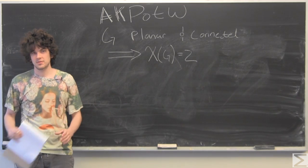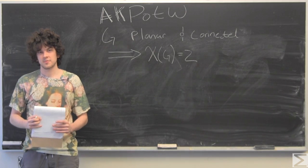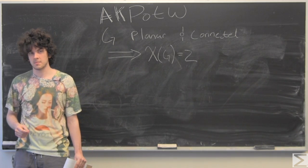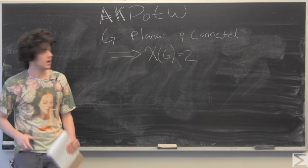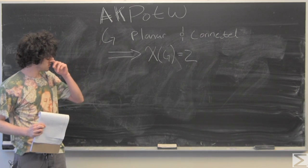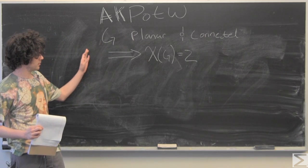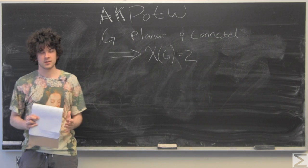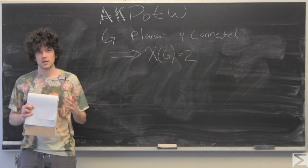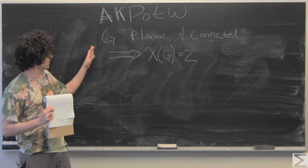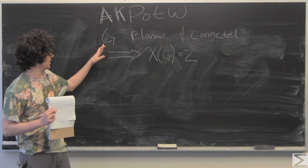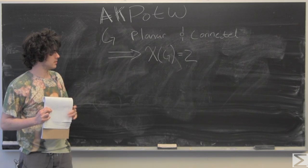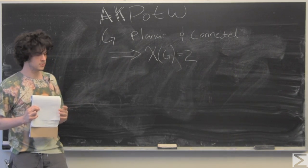Hello, and welcome to the Worldwide Center of Mathematics Advanced Knowledge Problem of the Week. This week, we're proving the Euler characteristic of planar and connected graphs is equal to 2.